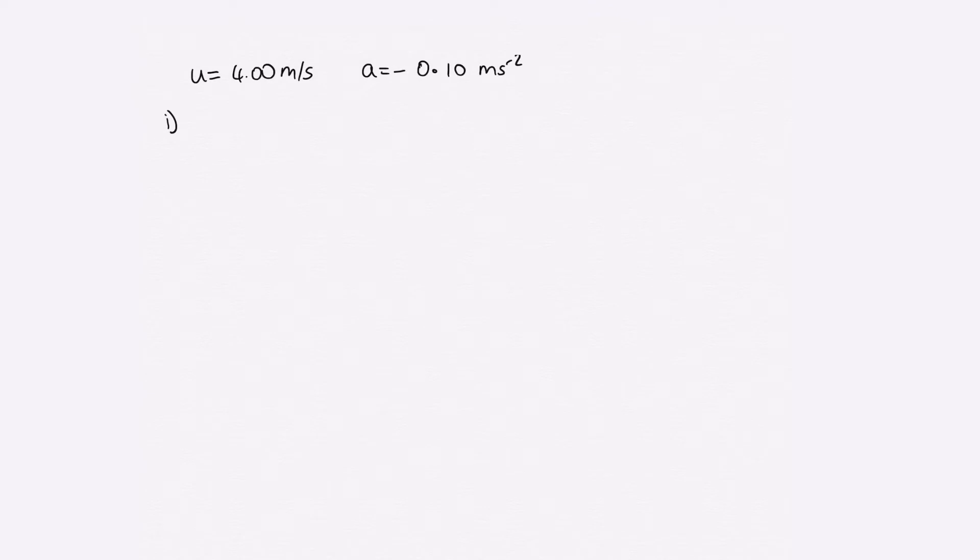In order to do that, we're trying to find v. So an appropriate kinematic equation to use is v is equal to u plus at. We know t is equal to 30 seconds, and we've already got a and u.